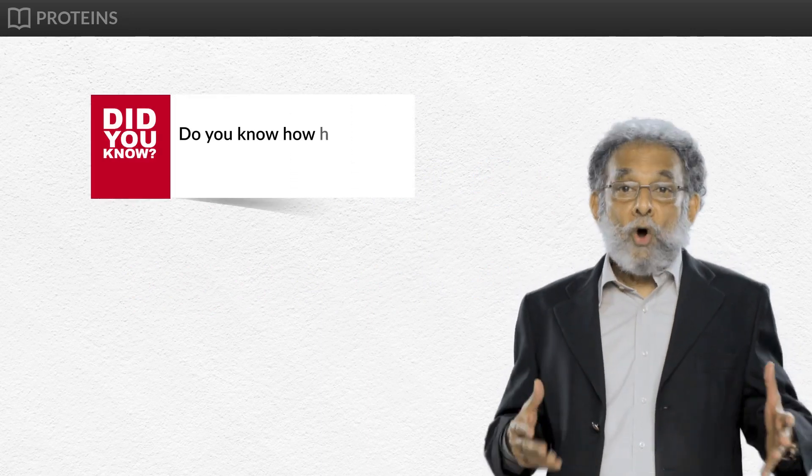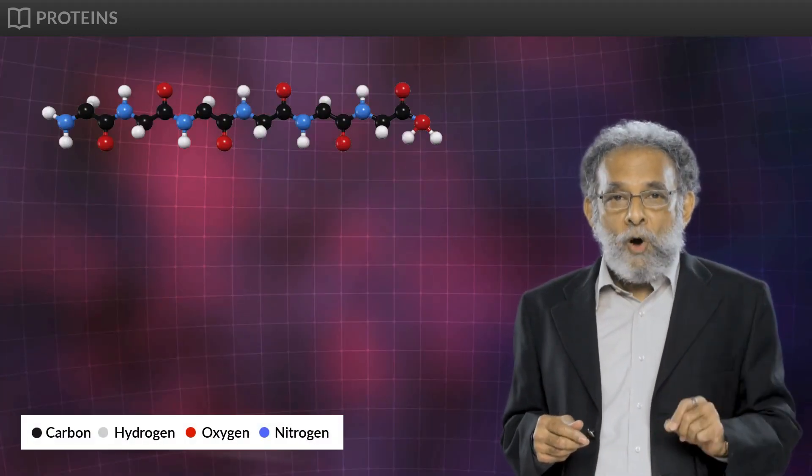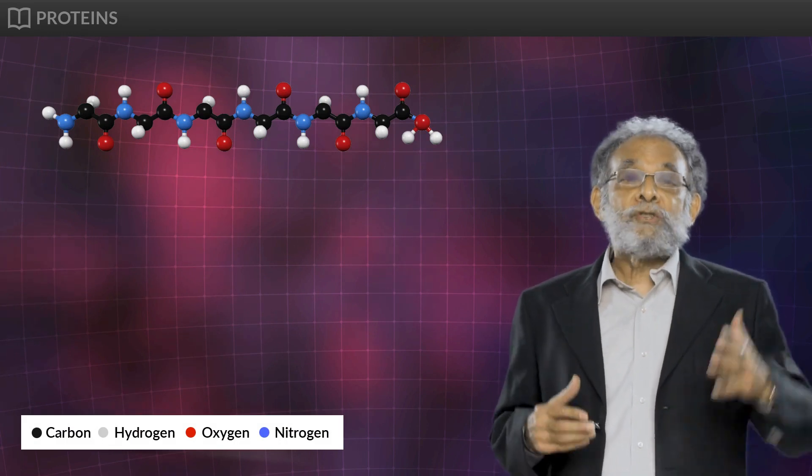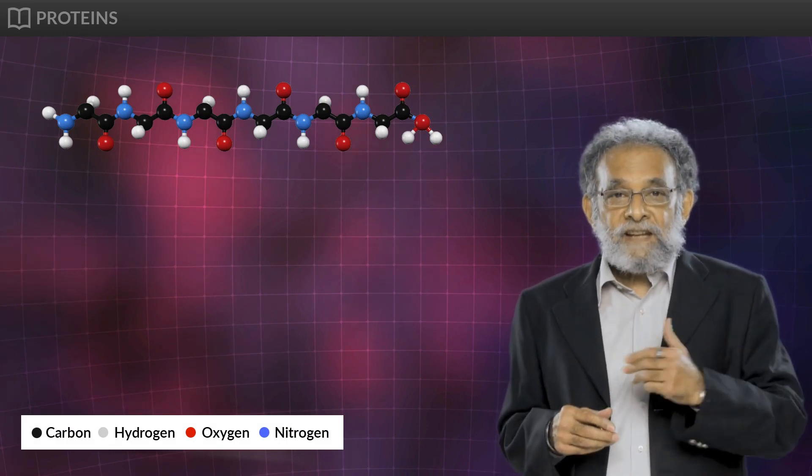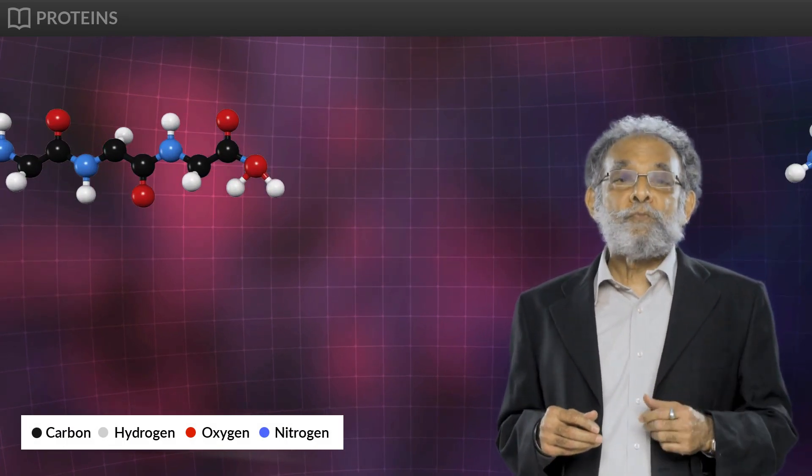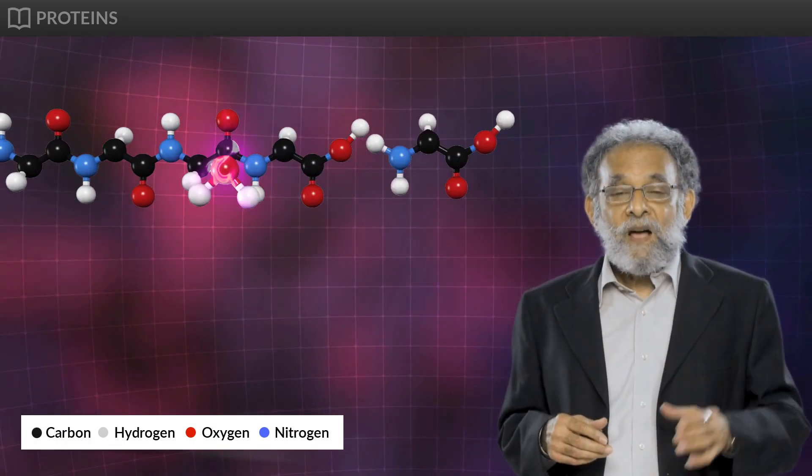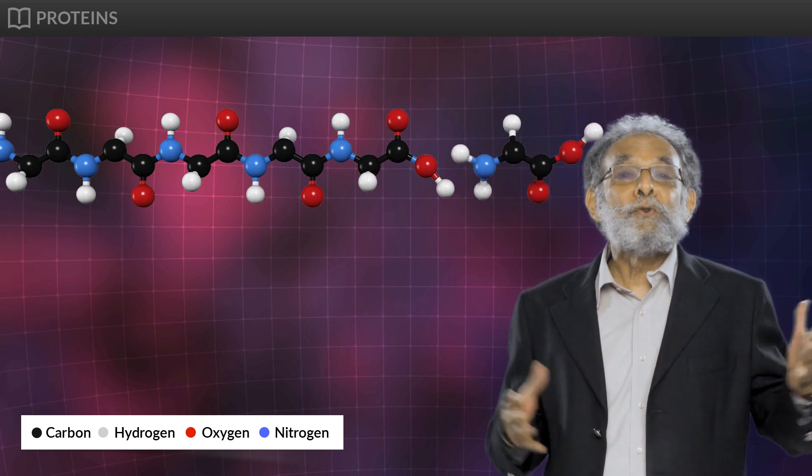Do you know how a peptide bond is formed? Peptide bond is formed when a COOH group of one amino acid reacts with an NH2 group of the next amino acid by releasing a molecule of water.